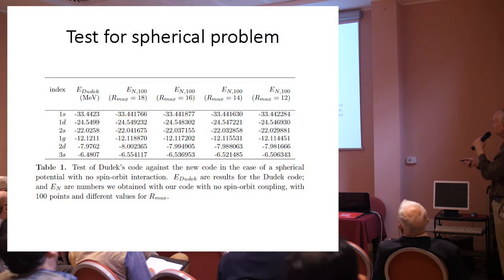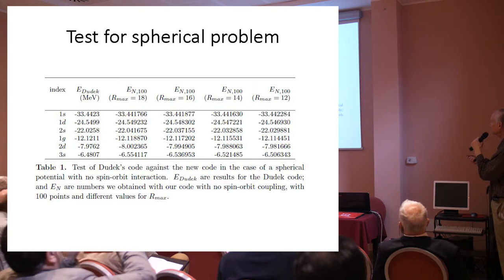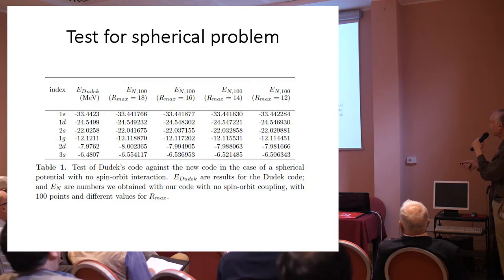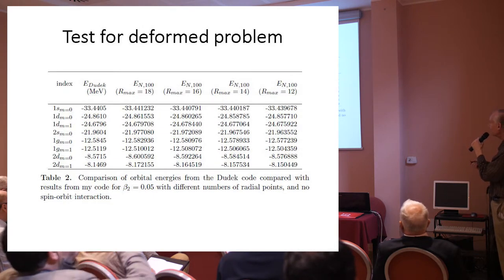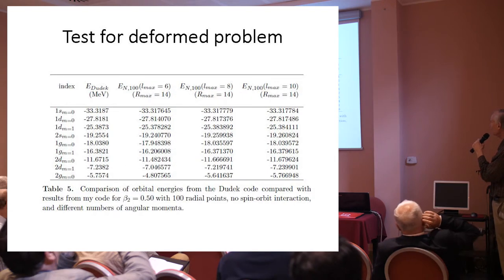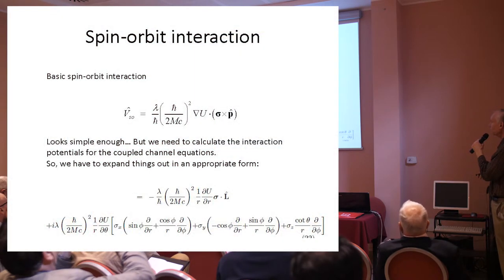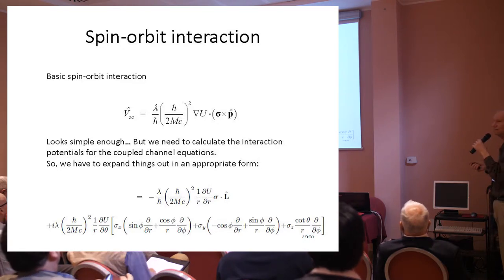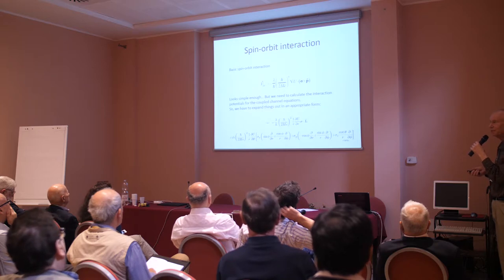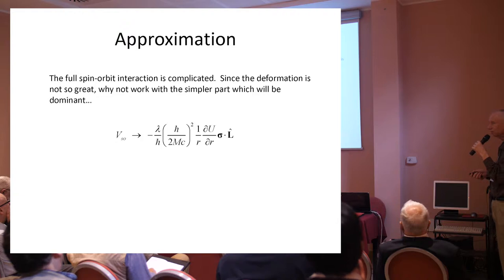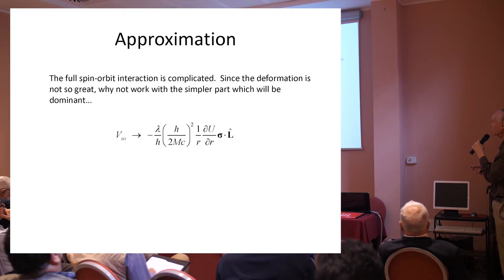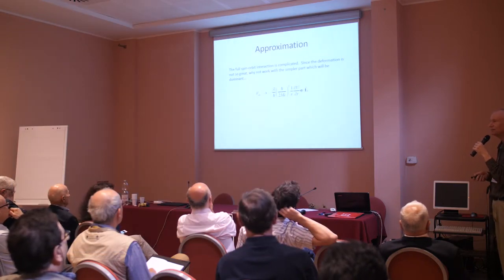For a spherical problem I tested it — comparing Dudek's code against my code: for the 1s state, 3s state, and states in between, the answers look good, so my code basically works. I did a deformed problem, and again checking both columns the two codes look good. More deformed problems with more angular momentum channels in larger space also look good. For the spin-orbit interaction, the dominant part is basically empirical. For the deformed problems I found that only keeping part of the spin-orbit got pretty good answers and ran much faster.